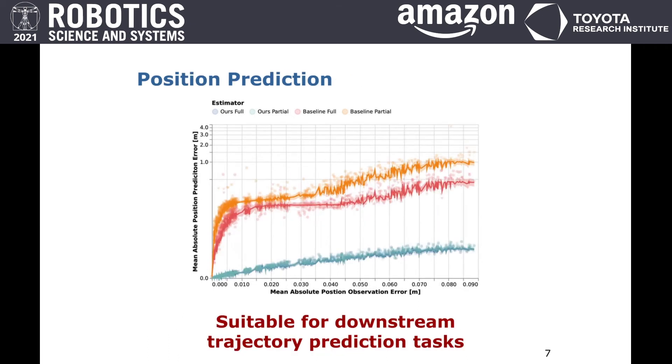We also evaluate the position prediction performance of both methods on the same dataset. For this purpose, we solve the forward game corresponding to the estimated objectives and measure the absolute error of the predicted trajectory. This evaluation in trajectory space shows an even more pronounced advantage of our method over the baseline. Overall, the results show that our method is suitable for downstream trajectory prediction tasks.